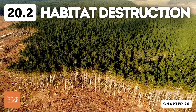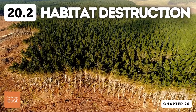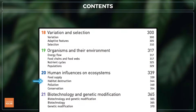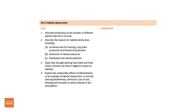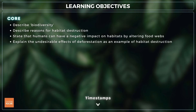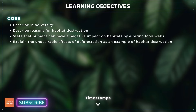Hello and welcome to another complete Cambridge IGCSE biology lesson where you'll learn absolutely everything you need to know on topic 20.2 habitat destruction. As always we'll be following the Cambridge syllabus exactly. For topic 20.2 you need to describe biodiversity, describe reasons for habitat destruction, and explain the undesirable effects of deforestation as an example of habitat destruction. There's no extended supplement for this lesson.